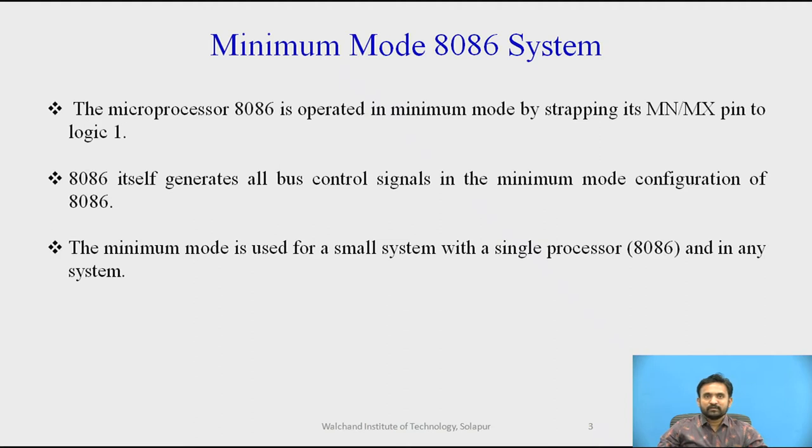Let us see minimum mode 8086 system. The 8086 microprocessor is configured in minimum mode when its MN/MX pin is connected to logic 1. In this mode, all the control signals are given out by the microprocessor chip itself.